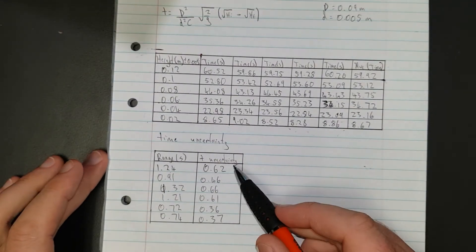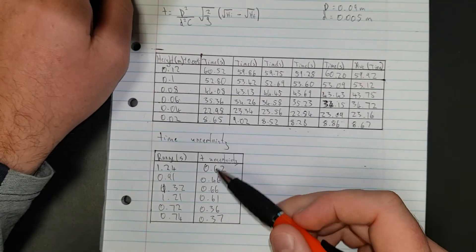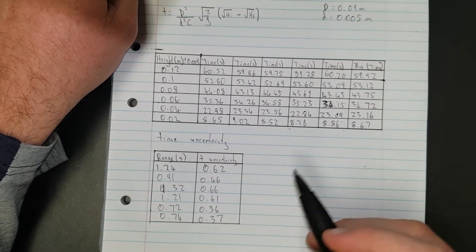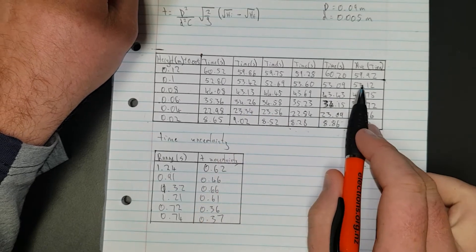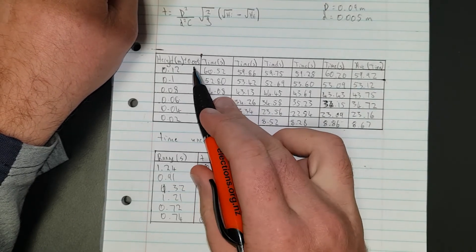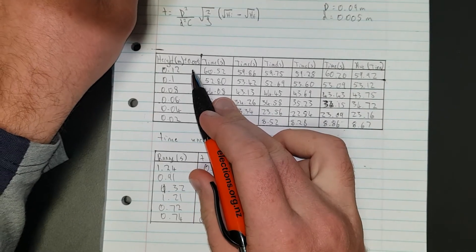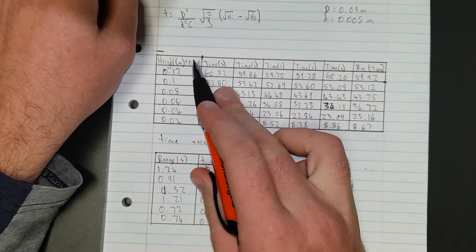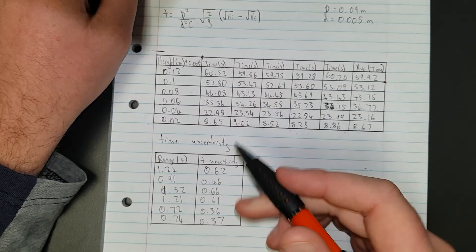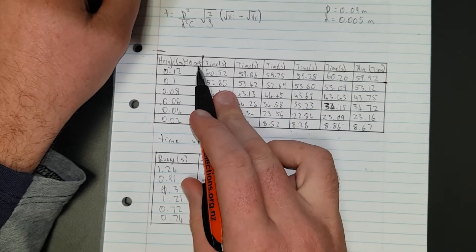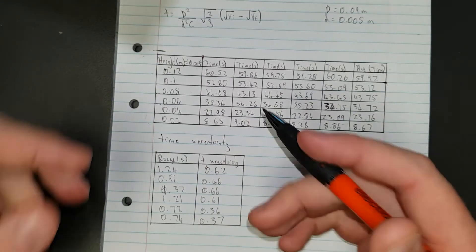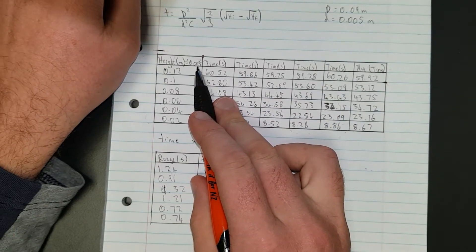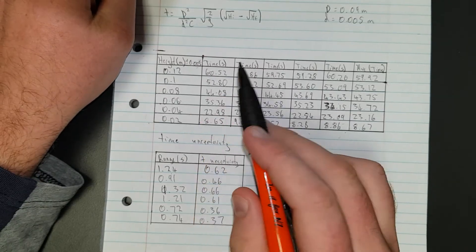These are all my uncertainties. As you can see, for each different measurement of time you get a different uncertainty. That's the difference between your dependent uncertainty and your independent. Your independent you choose based on your experiment - it's got to be reasonable. I chose half a centimeter because that was reasonable.